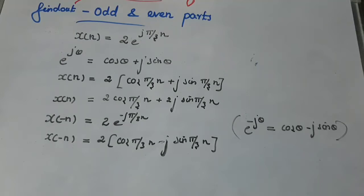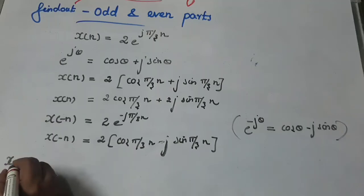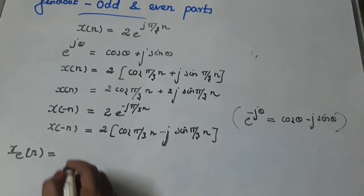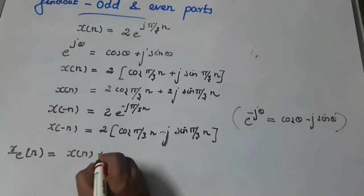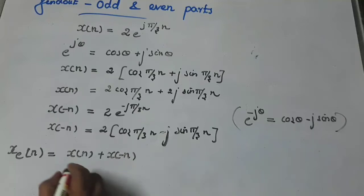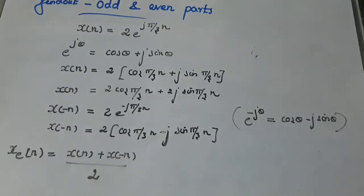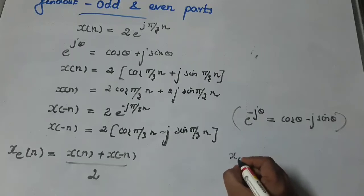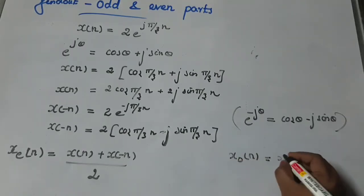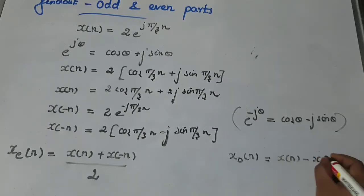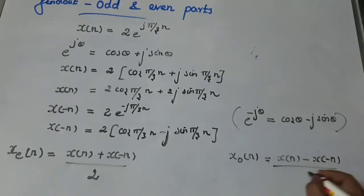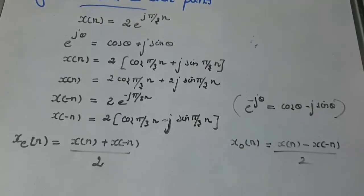The formula for the even part of the signal is: x_e(n) = [x(n) + x(-n)] / 2. Similarly, the odd part of the signal is calculated using: x_o(n) = [x(n) - x(-n)] / 2.